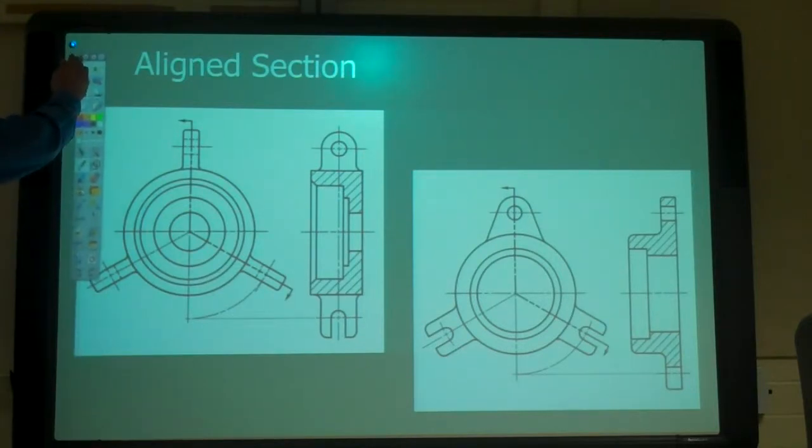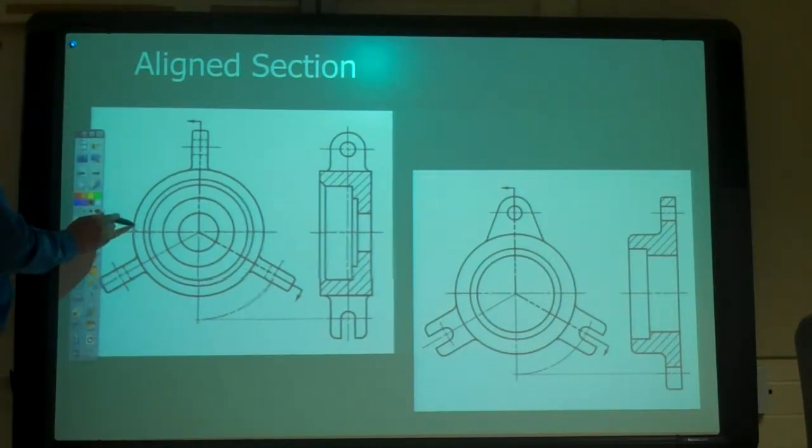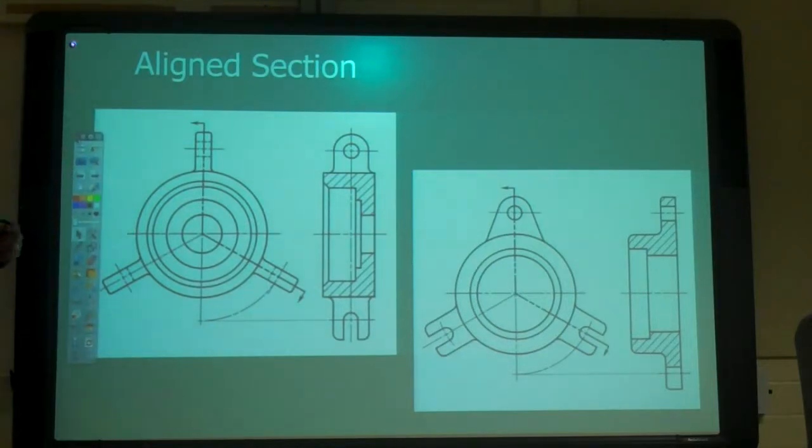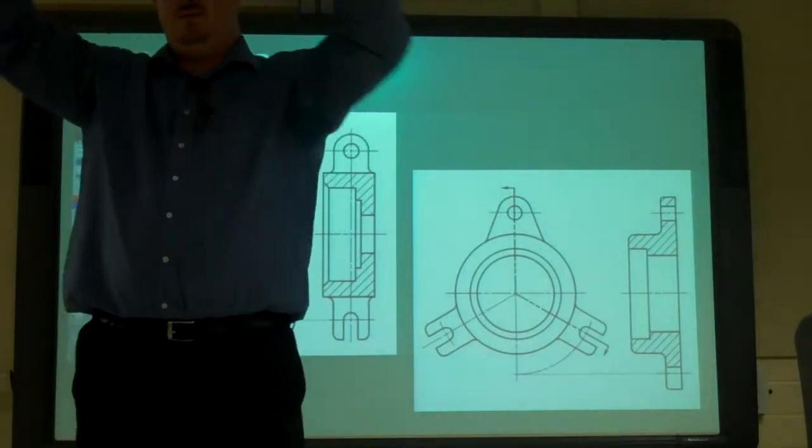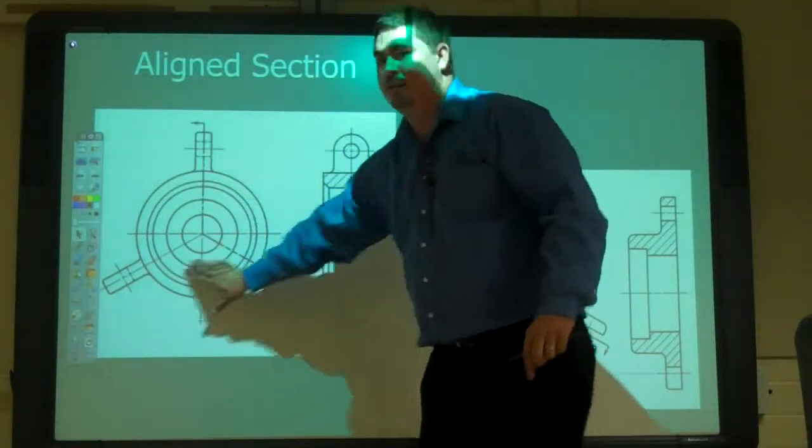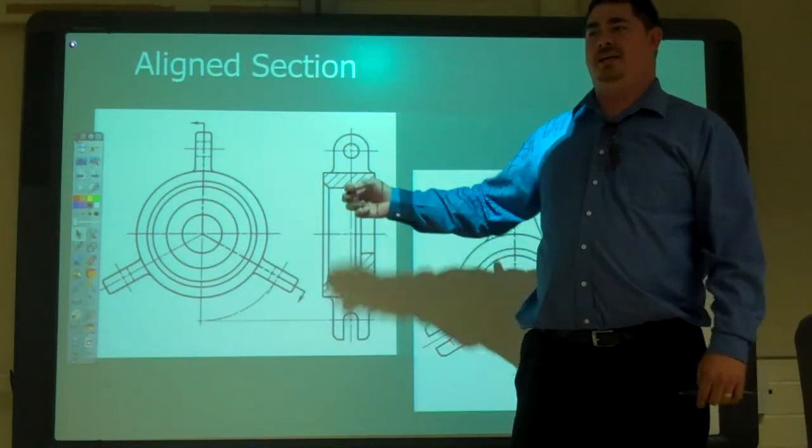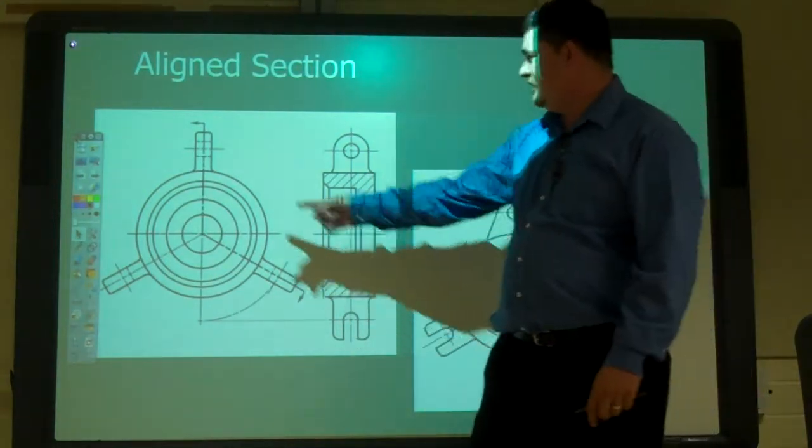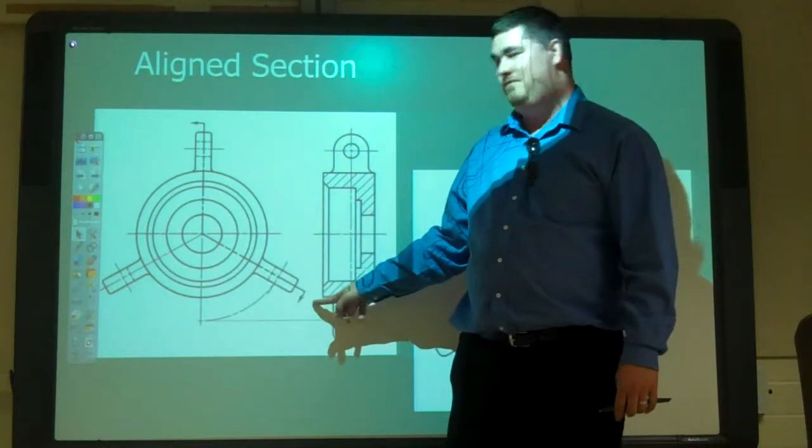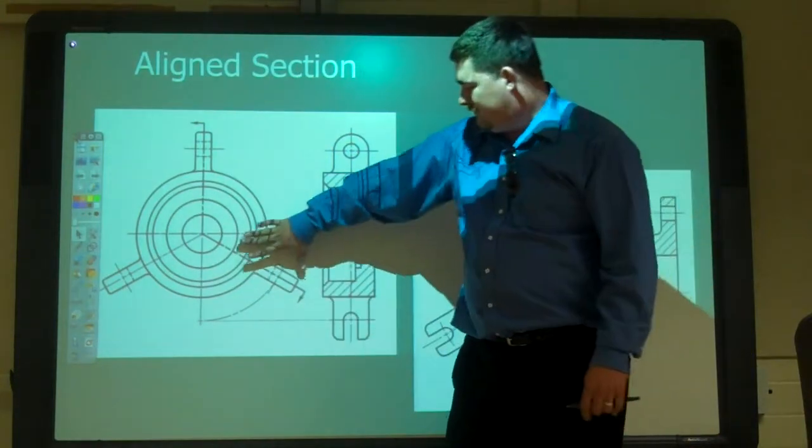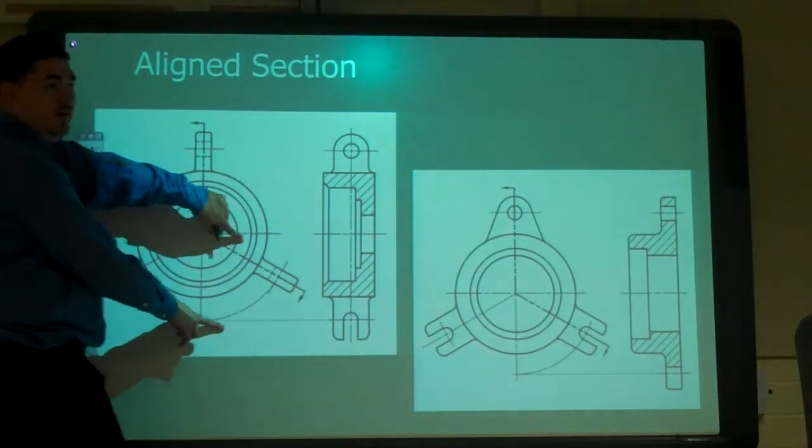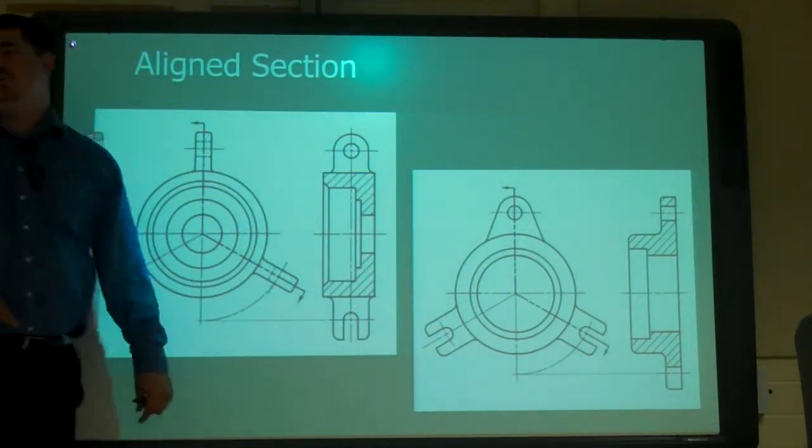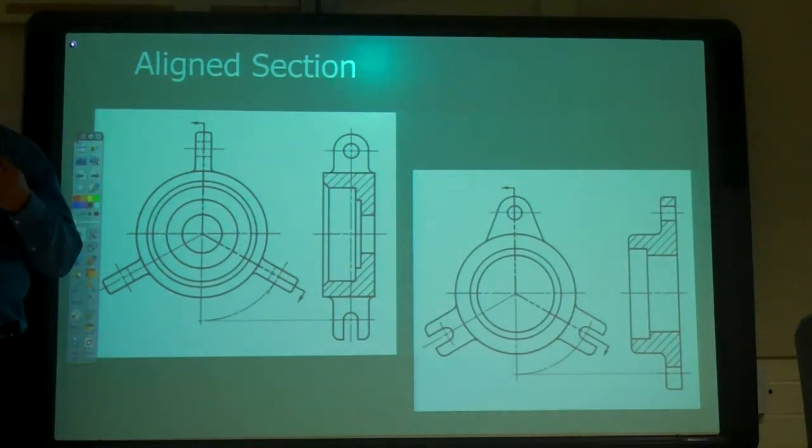So aligned section, remember back when we did aligned views? We had parts that were kind of symmetrical, they were kind of round, they had like two things. It would bring one of them down and over. The aligned section is the same exact thing. But now our section line goes down and we go out like that. So now we just revolve this down to the bottom. We just take this and kind of pull it down. And then we push it across for projection. So it's just like we did before, but now it's a section. Okay?